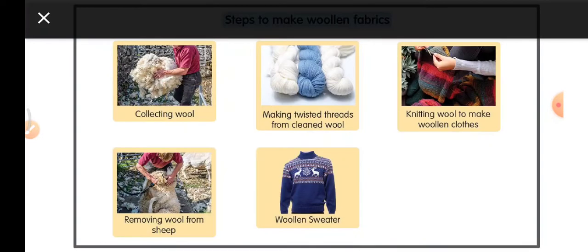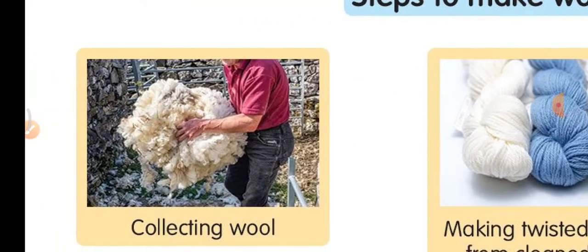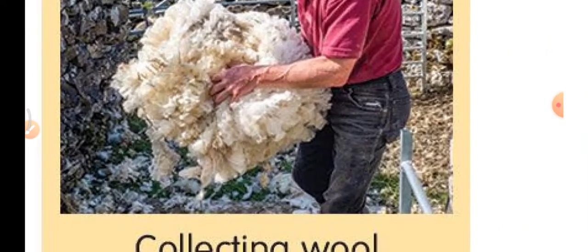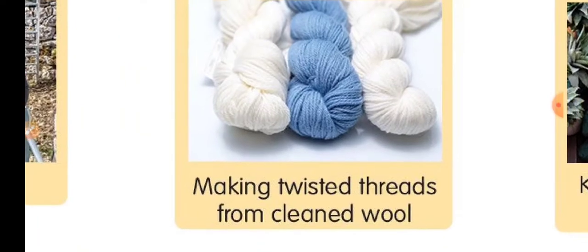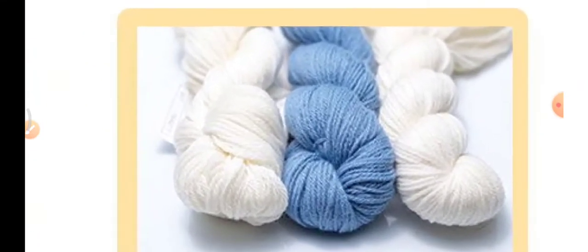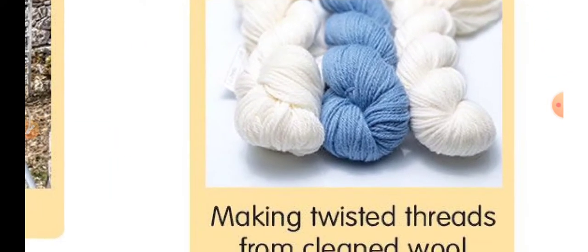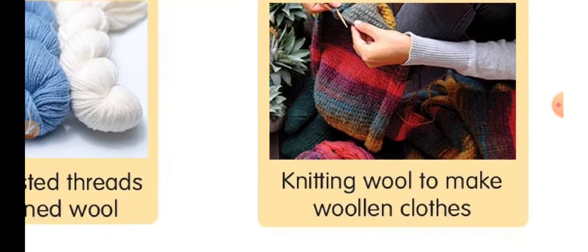Let us observe this chart showing the steps to make woolen fabrics. First, they collect the wool — in picture one you can see the wool being collected. Then, twisted threads are made from cleaned wool — the woolen thread is made and cleaned.